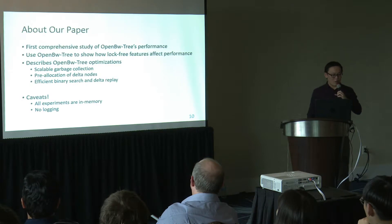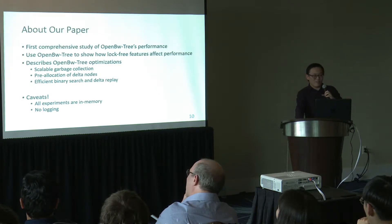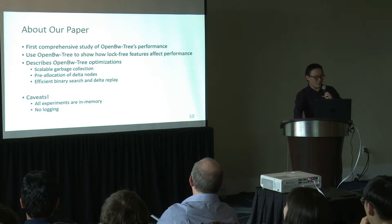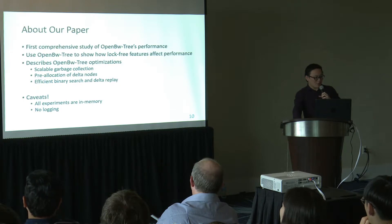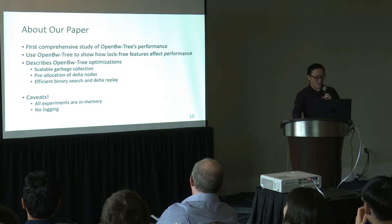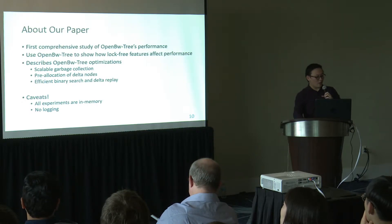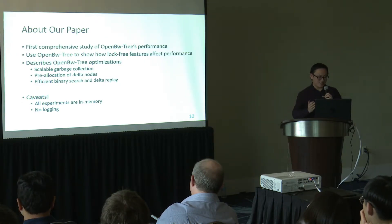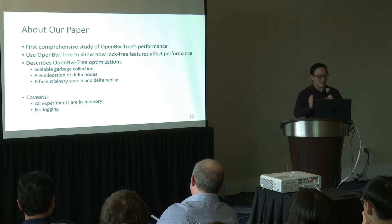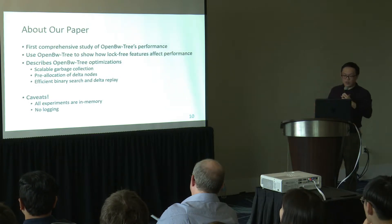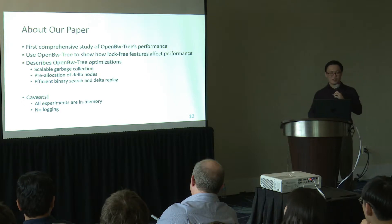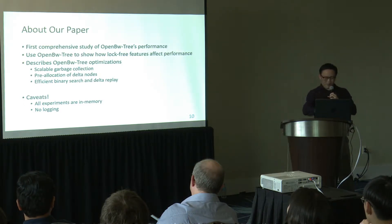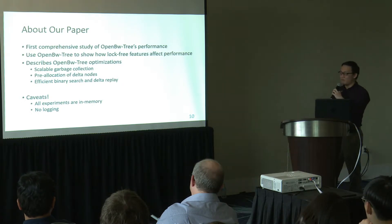We summarize the contributions of our paper as follows. First, we believe our paper is the first comprehensive study of OpenBWTree's performance. Second, we use OpenBWTree to show how lock-free features can affect the performance of a lock-free data structure. In our paper we also describe many optimizations applied to OpenBWTree — many of them are very interesting, such as a scalable garbage collector, pre-allocation for delta nodes within the base node, and efficient algorithms for performing binary search and delta replay on the delta chain.